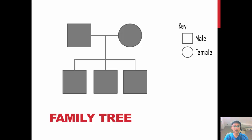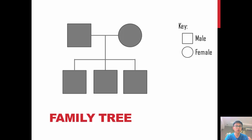Because it takes a female and a male to reproduce, all of us have a mother and a father. If your mother and father reproduce more than one baby, you will have siblings. And this can be shown using what we call a family tree.